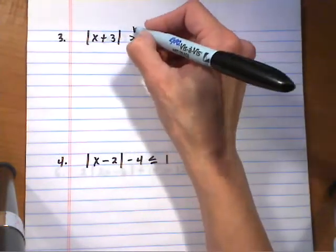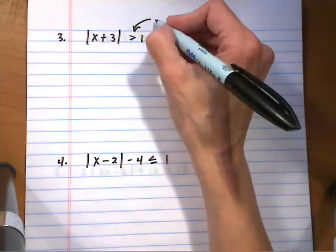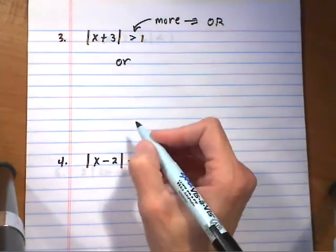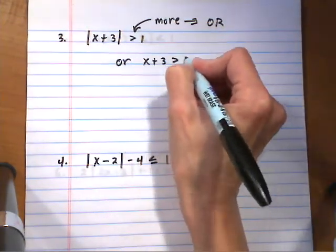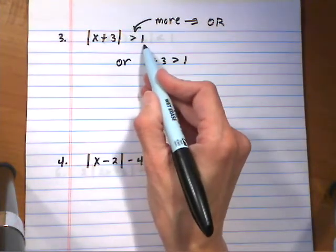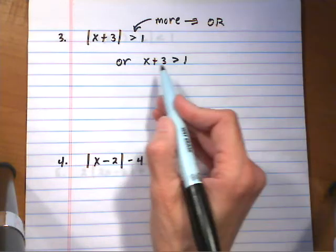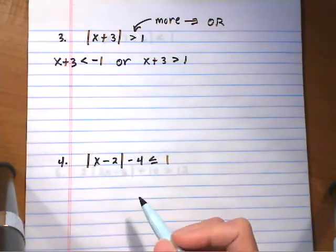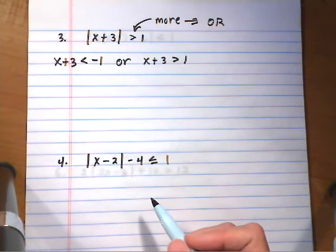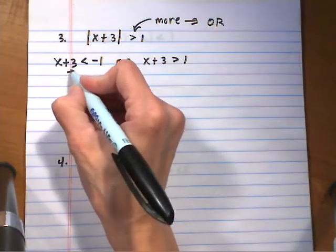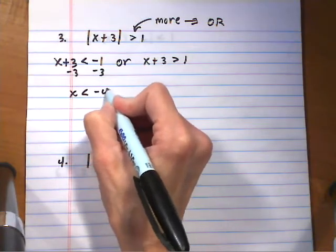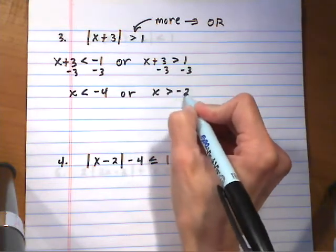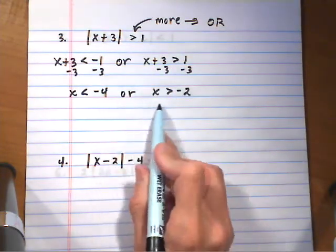Number 3: first look — do you have less than or more than? We have more, so it's an or. Either x plus 3 is greater than 1 — take the inside out, keep the direction and sign — or take the inside out and switch the direction and sign, so x plus 3 is less than negative 1. Subtracting 3 from both sides of each: x is less than negative 4, or x is greater than negative 2.